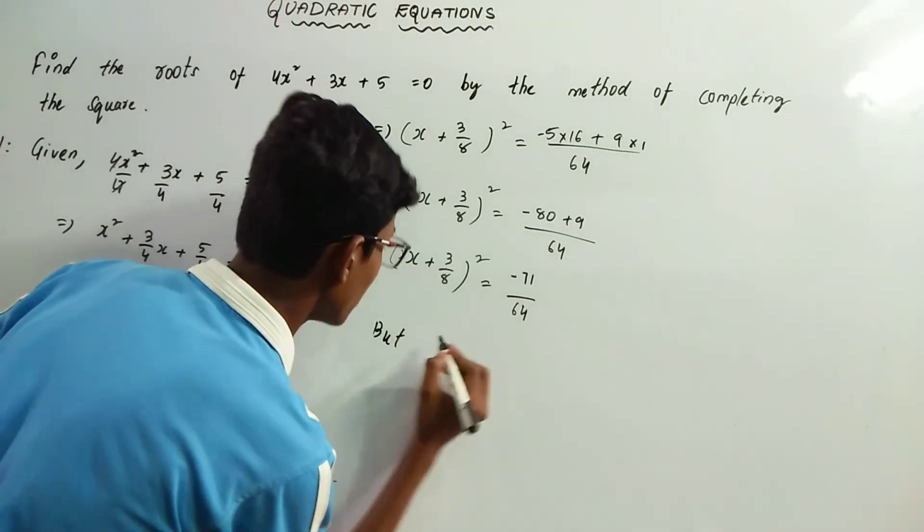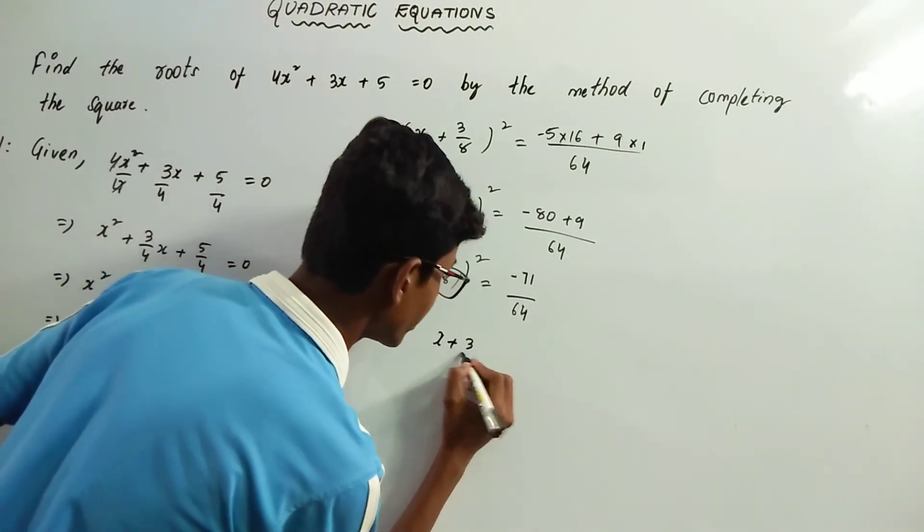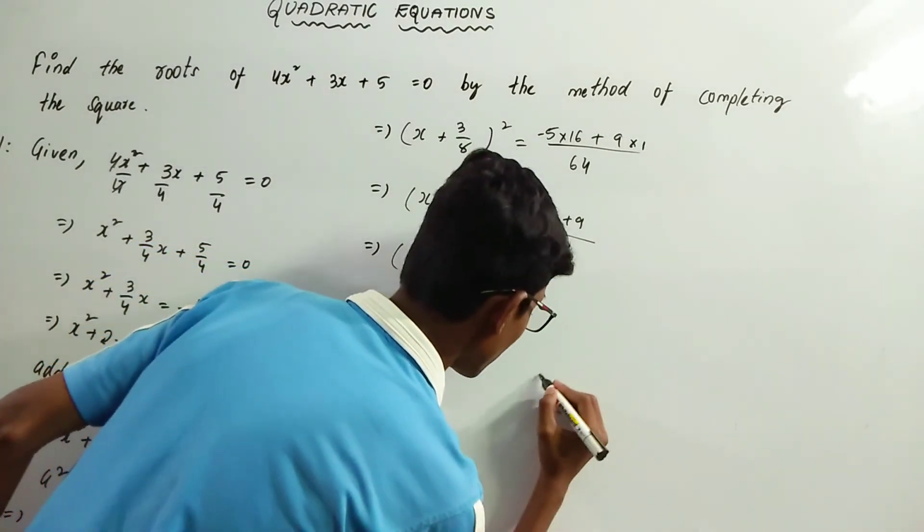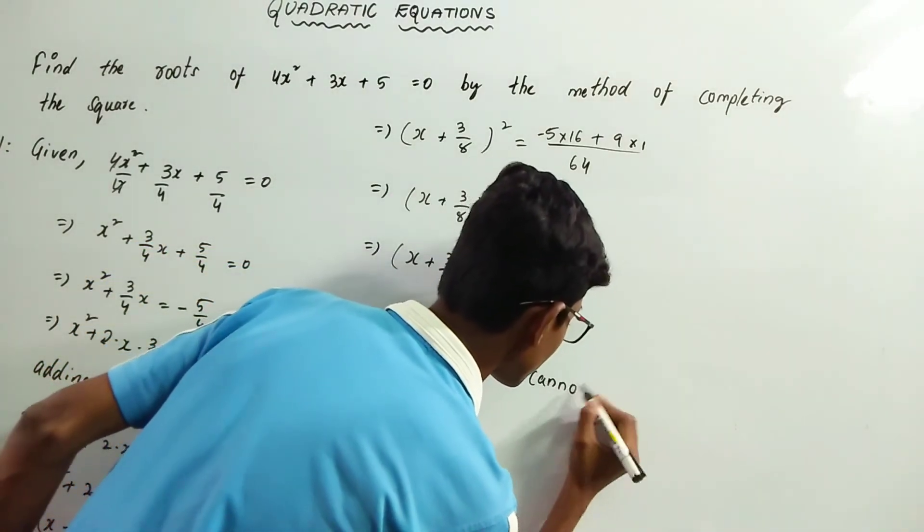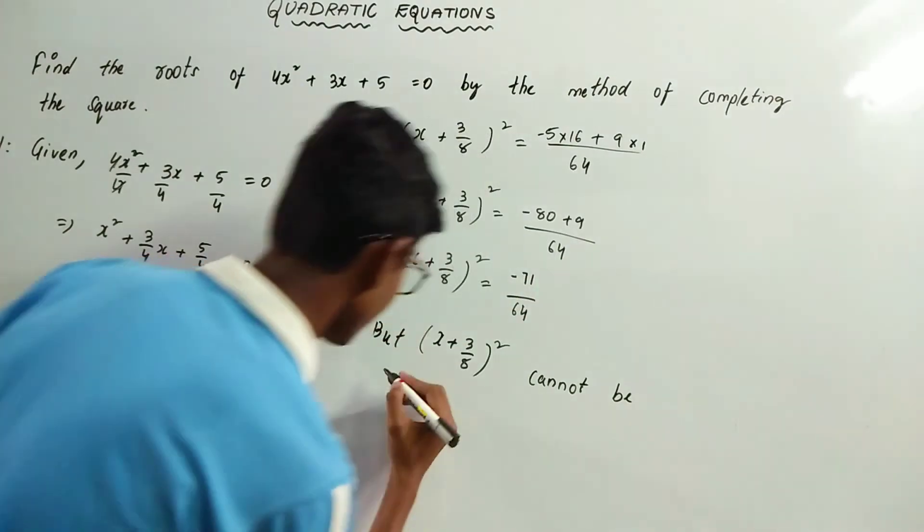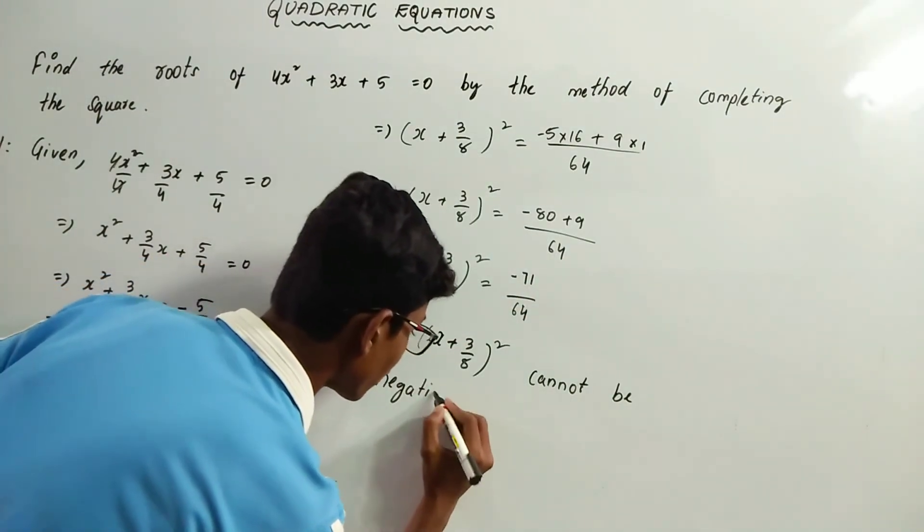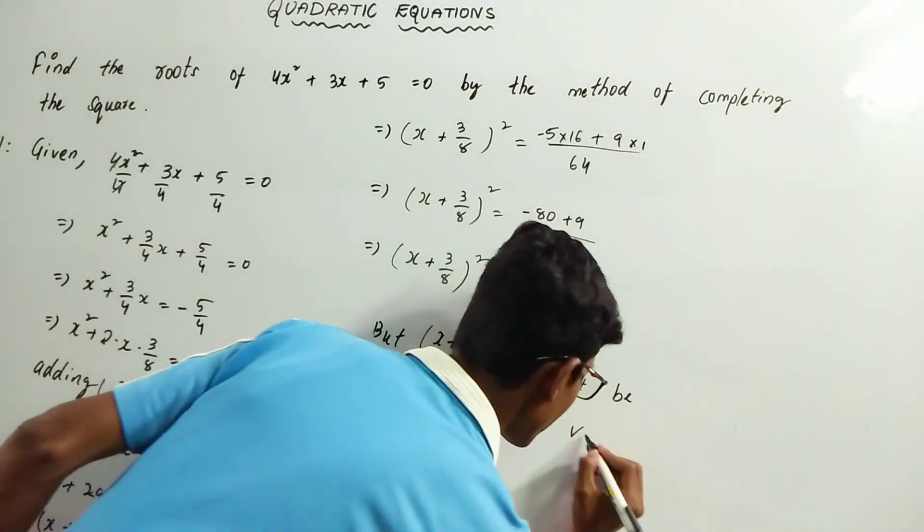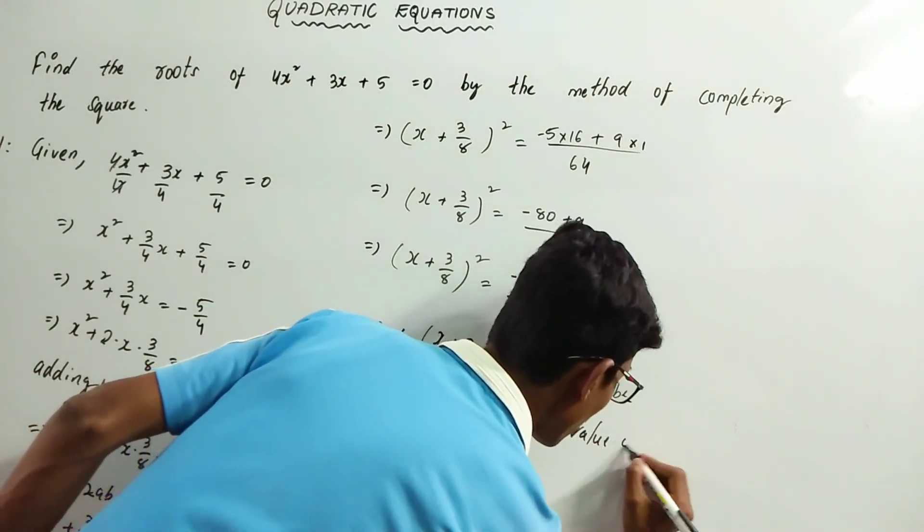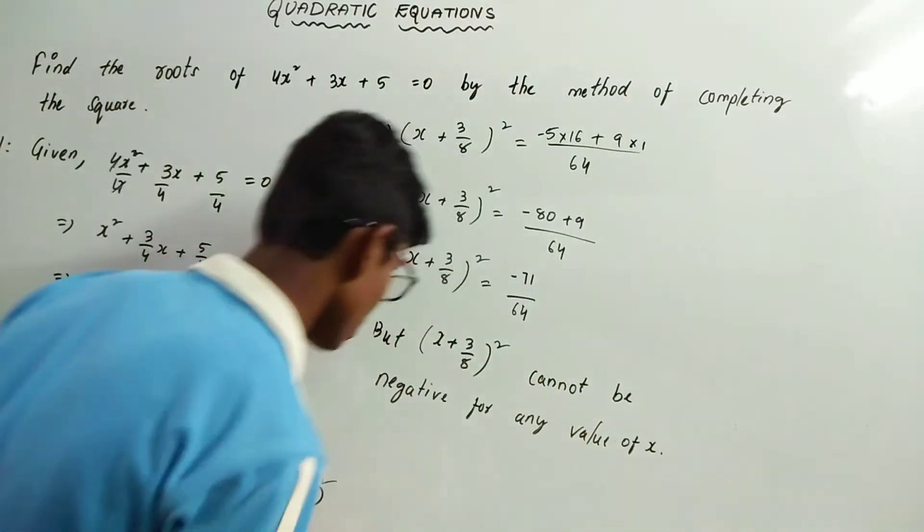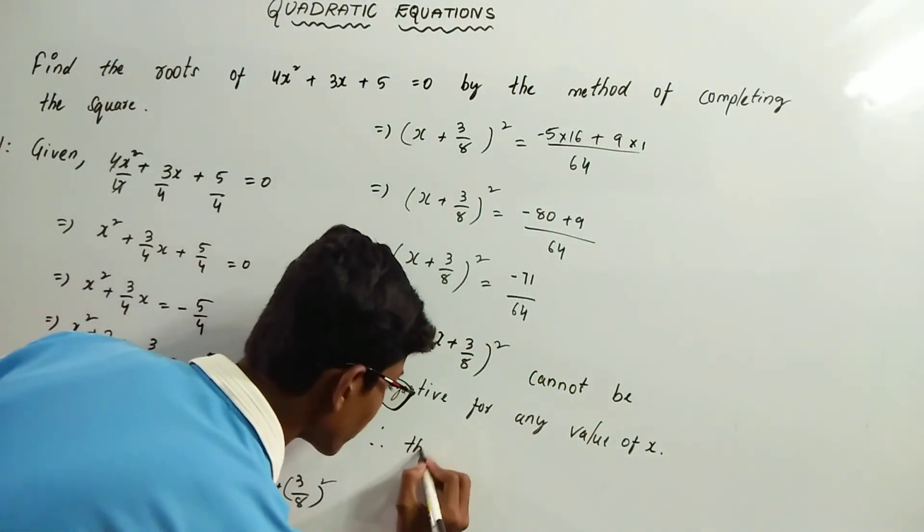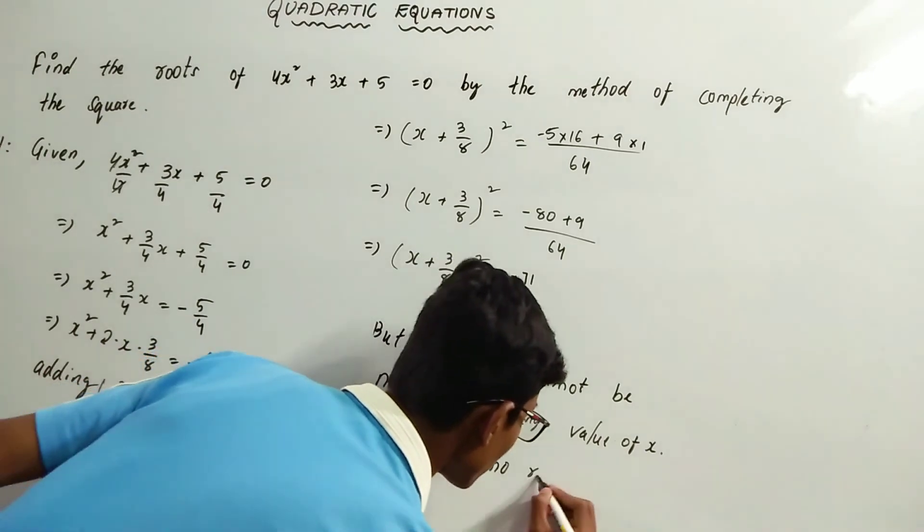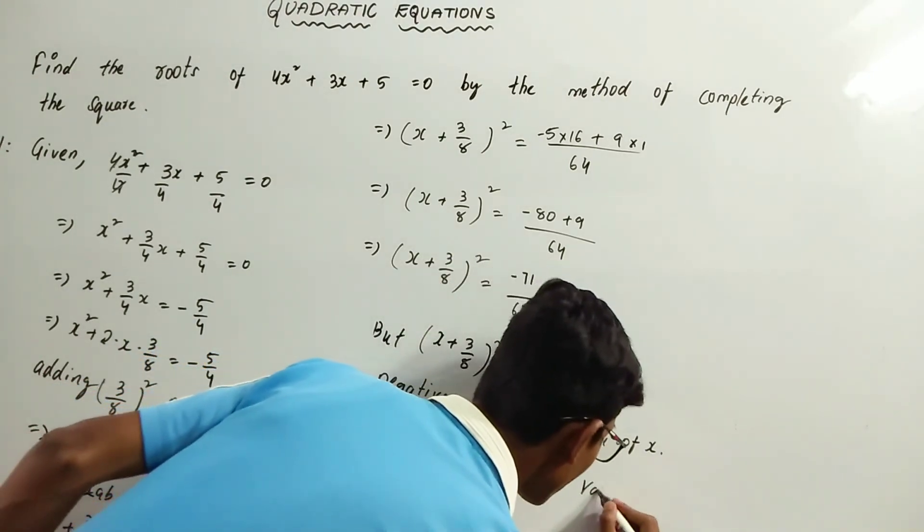But (x + 3/8)² cannot be negative for any value of x. Therefore, there is no real value of x.